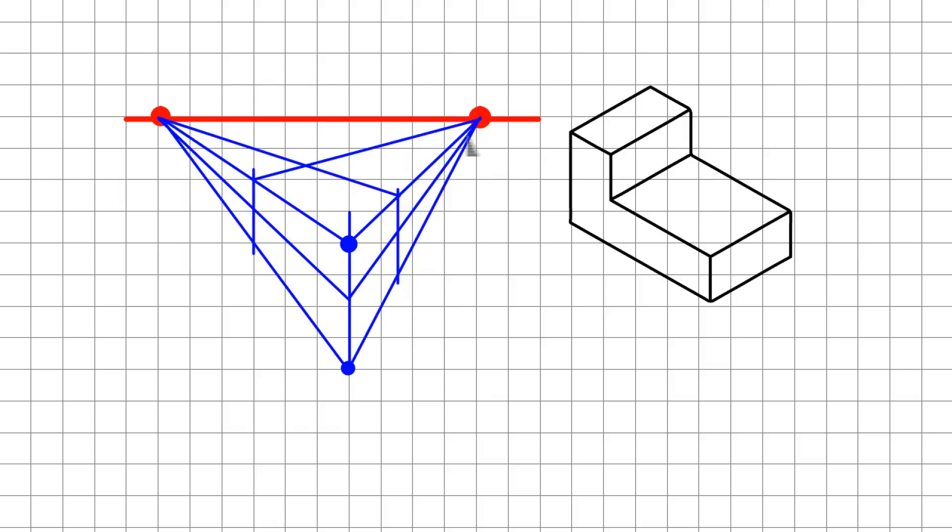To do that, I'm going to go from my right vanishing point and I'm going to draw a line going somewhere out to the top construction line coming in from the left vanishing point. This line will eventually be represented by the line right here.